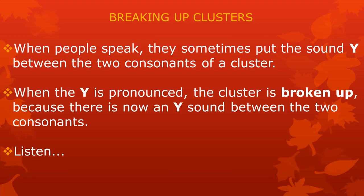When people speak, they sometimes put the sound E between the two consonants of a cluster. When the E is pronounced, the cluster is broken up because there is now an E sound between the two consonants. Listen: SKIWA, SEKIWA. When I say SKIWA there is a cluster, SK. When I say SEKIWA, the cluster is broken up by the E sound.